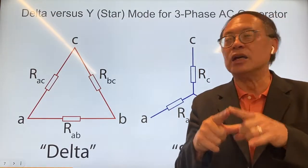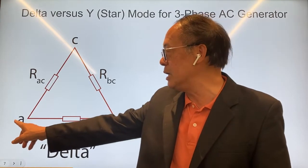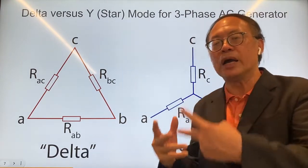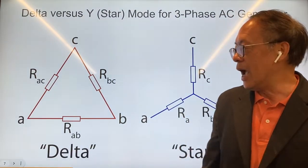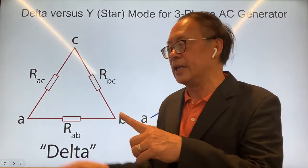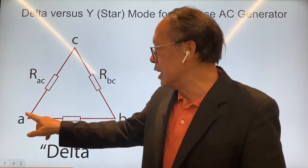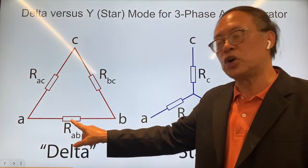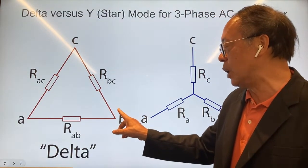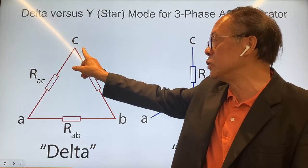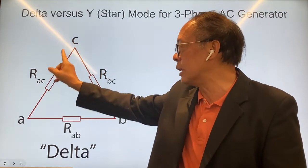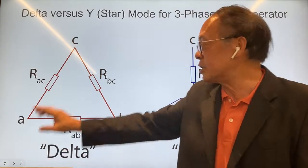Since we have three triangles, we have three phases of electricity coming out: A, B, and C. There are three ways to connect the six wires. There is a pair of wires coming out from each triangle. The A1 wire goes into the first triangle, and the A2 wire comes out of the first triangle. A1 connects to A2, A2 connects to B1, B1 connects to B2, B2 connects to C1, C1 connects to C2, and C2 connects back to A1. That's called the delta mode.